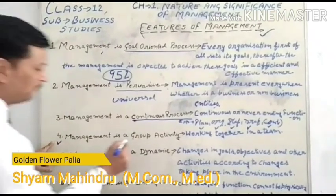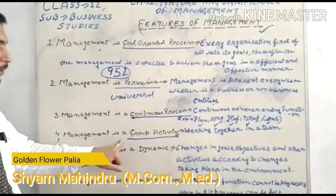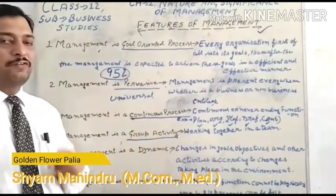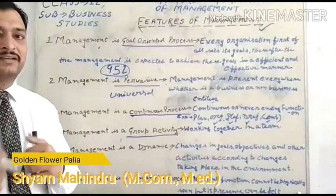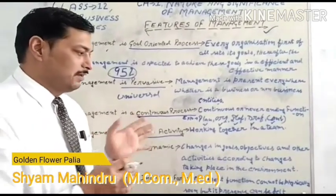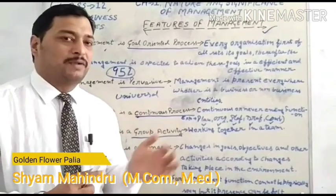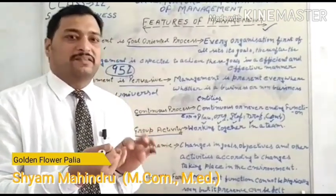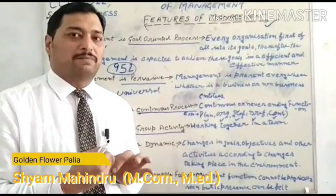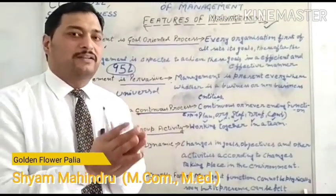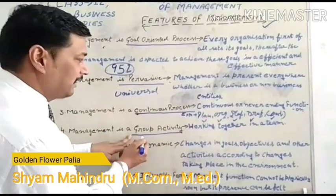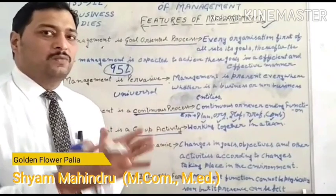The next feature is: management is a group activity. Group means working together as a team. As I explained in yesterday's definition, management is not the work of a single person — it is teamwork. In a single organization, there are many departments: finance department, sales department, production department, purchase department. Each and every department will work together to achieve the organization's goals. All departments, all persons, all individuals will work together.